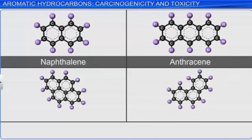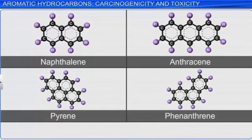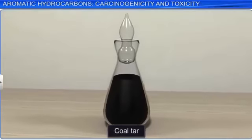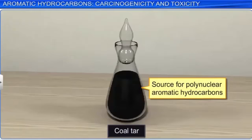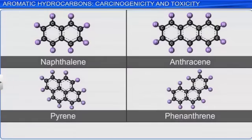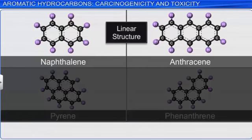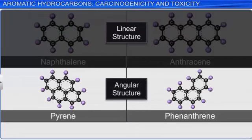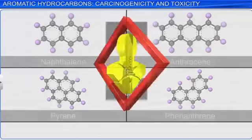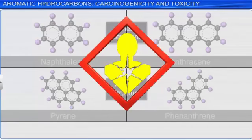Aromatic hydrocarbons containing two or more fused rings are called polycyclic aromatic compounds, or polynuclear aromatic hydrocarbons. Coal tar is the main source of polynuclear aromatic hydrocarbons. These hydrocarbons possess either a linear or an angular structure. An example of a hydrocarbon with a linear structure is naphthalene or anthracene, and one with an angular structure is phenanthrene and pyrene. These hydrocarbons are carcinogenic — that is, they cause cancer.